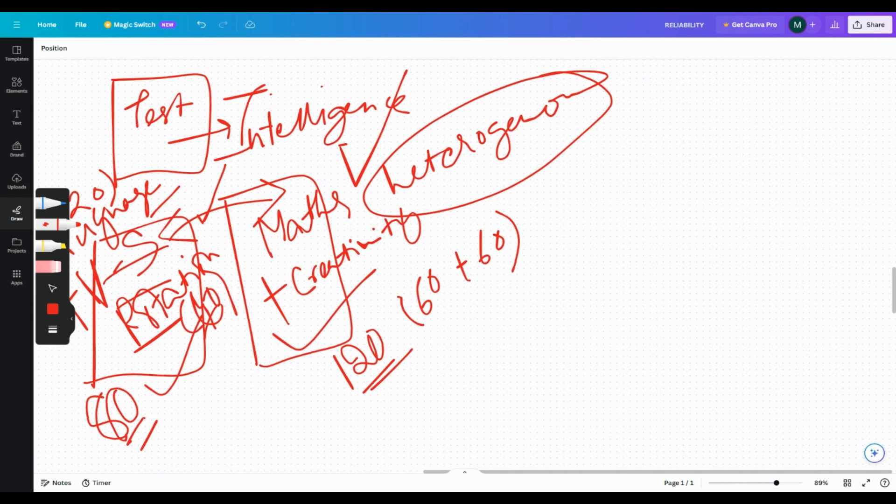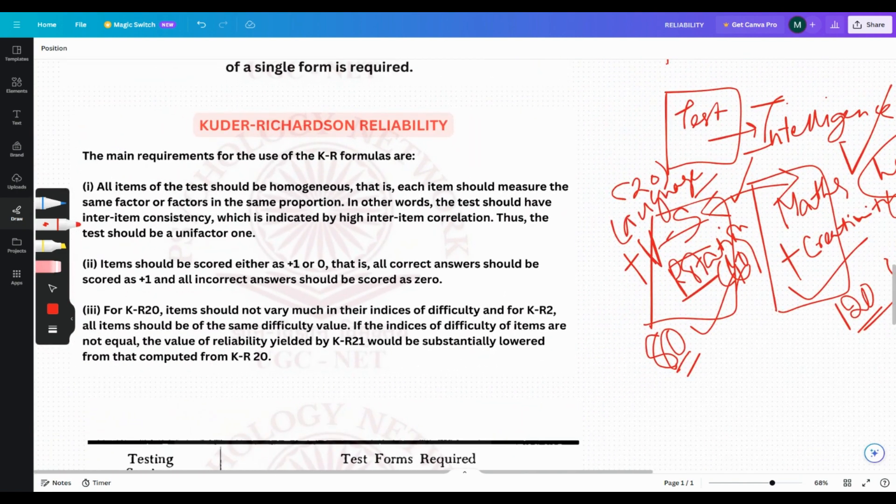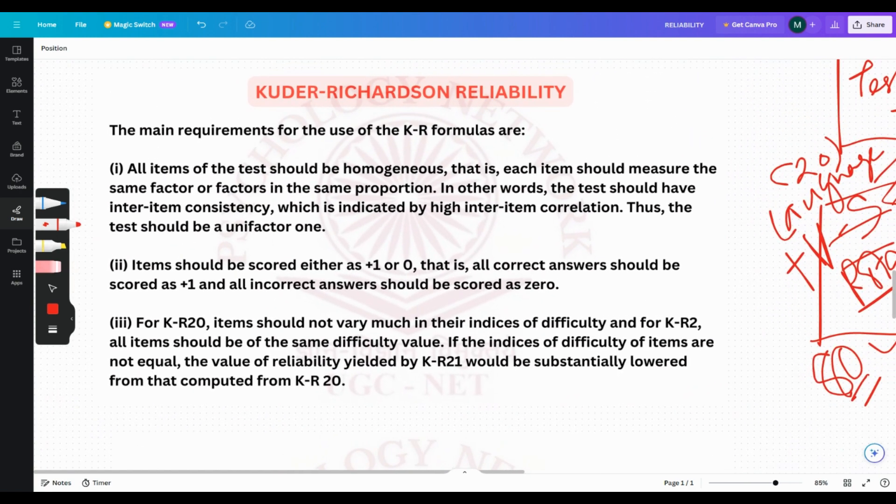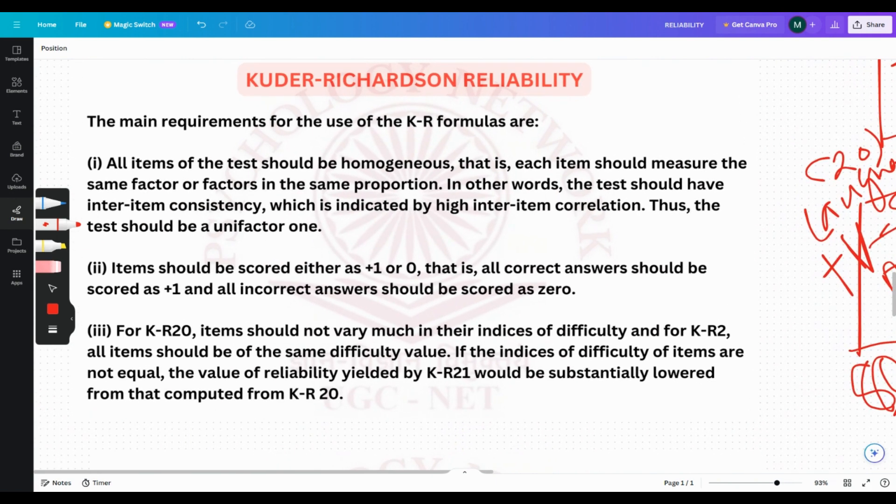So what they said is that the two forms should be homogeneous. They came out with certain formulas like K-20, K-21, the better refurbished one. To use the KR formulas, there are some requirements which have to be followed. The first one: all the items of the test should be homogeneous. That is, each item should measure the same factor in the same proportion. In other words, the test should have inter-item consistency, which would be indicated by inter-item correlation.